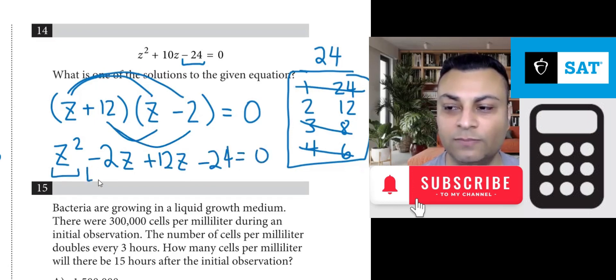z squared is there. This middle part will combine to make plus 10z. And then negative 24 is there.